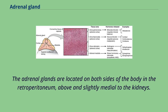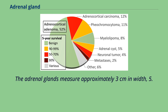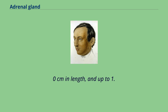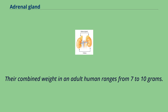The adrenal glands are located on both sides of the body in the retroperitoneum, above and slightly medial to the kidneys. In humans, the right adrenal gland is pyramidal in shape, whereas the left is semilunar or crescent shaped and somewhat larger. The adrenal glands measure approximately 3 cm in width, 5 cm in length, and up to 1 cm in thickness. Their combined weight in an adult human ranges from 7 to 10 grams.